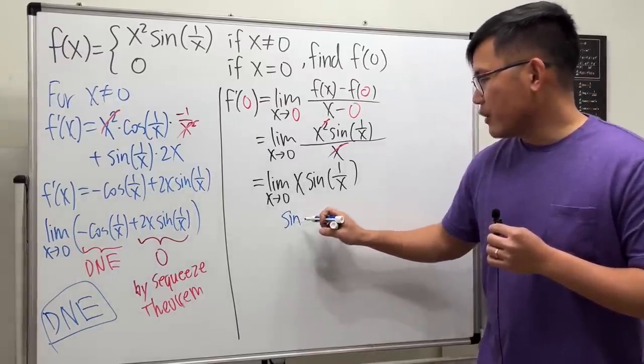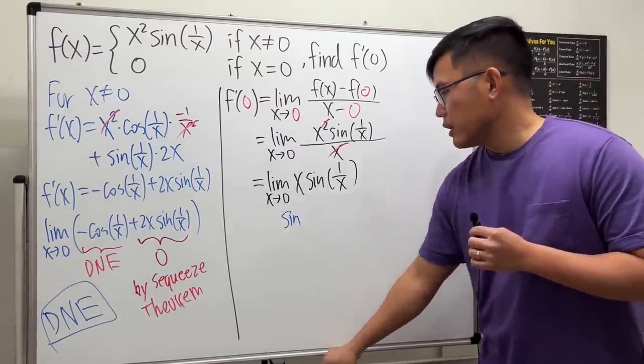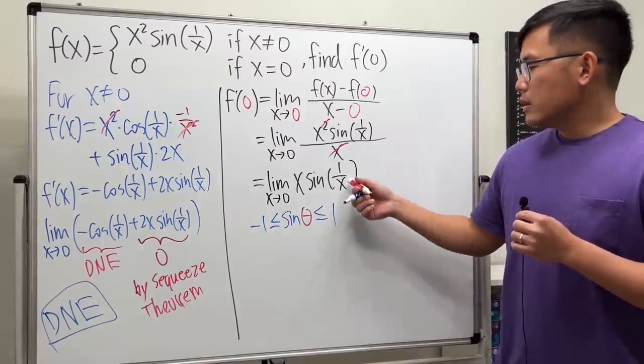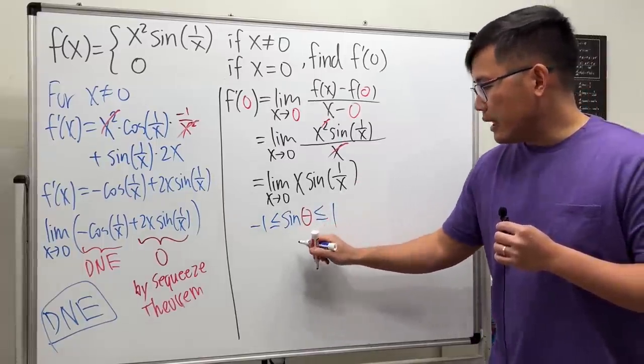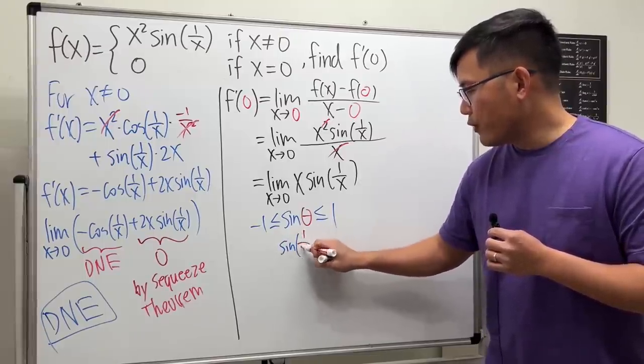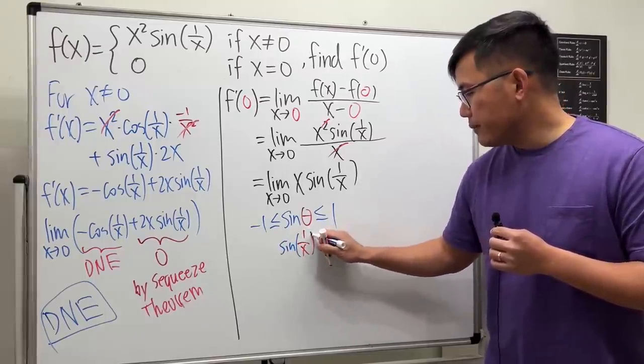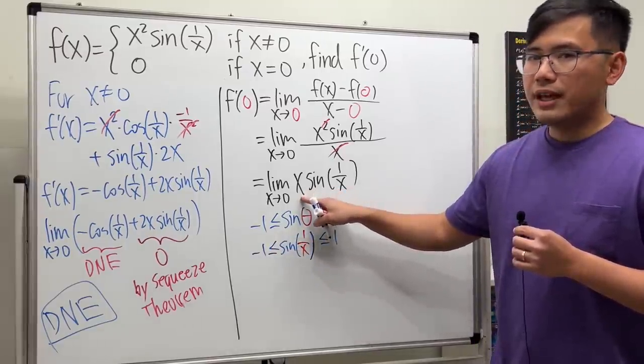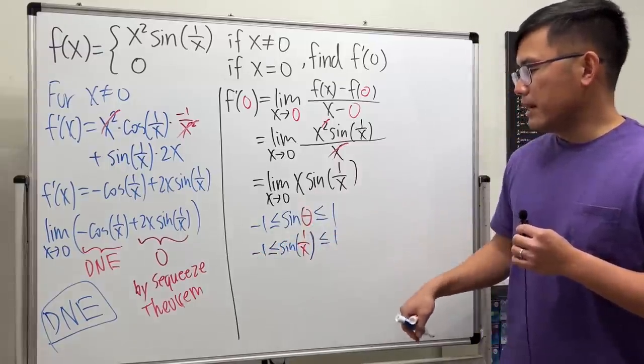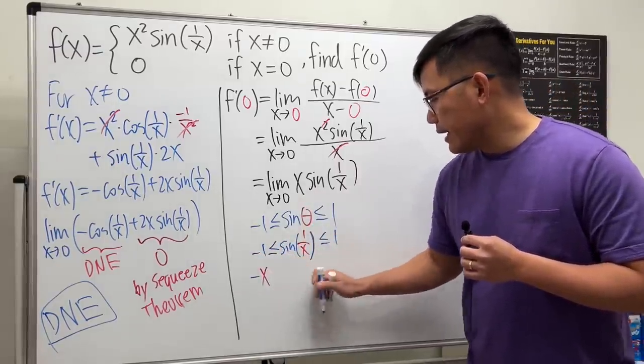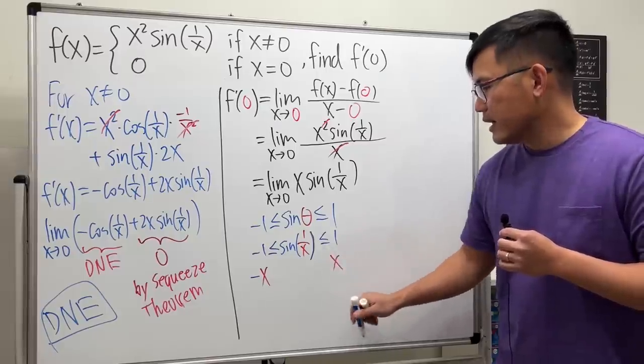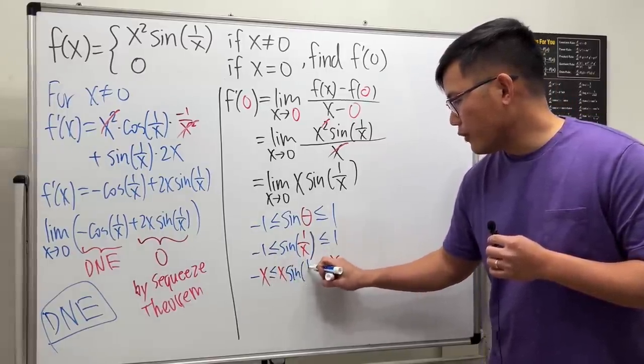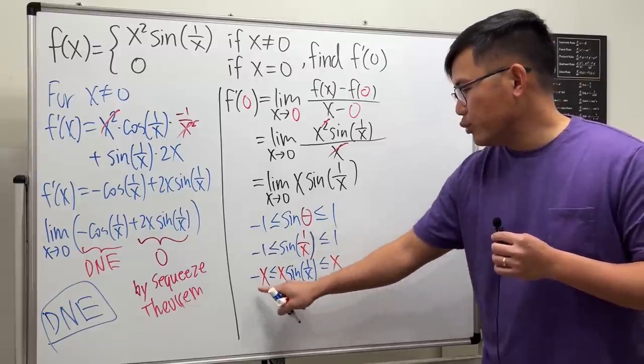First, we can say sine of any angle, I'll just put down theta for this. This is in between negative 1 and 1. So when we put 1 over x into the angle here, we can say sine of 1 over x. This right here must also be in between negative 1 and 1. Now, I want to have the x. Let's just multiply everybody by x. So we can say negative x. And right here, I will have x. This right here, we will have x times sine of 1 over x in the middle. And this must be in between of this and that.